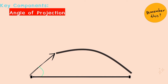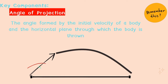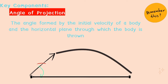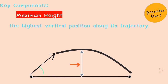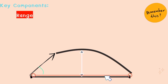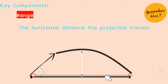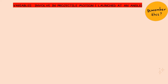Let us also identify the different key components you may encounter in projectile motion. The first is the angle of projection — the angle formed by the initial velocity and the horizontal plane through which the body is thrown. Next is the maximum height, which is the highest vertical position along its trajectory. The range is the horizontal distance the projectile travels.